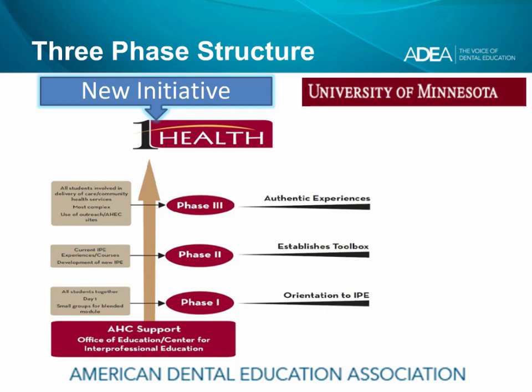The second stage establishes the tools students need going into team-based situations — learning the difference between a working group and a well-functioning team, team dynamics, and how to deal with conflict. Unlike phase one where all students take the same course, students in phase two choose opportunities best suited to them, such as simulation, projects, or courses. The third phase is authentic experiences working in teams for the betterment of patient health, using the tools developed through the other two phases in actual team-based care. This is the most difficult phase to develop.